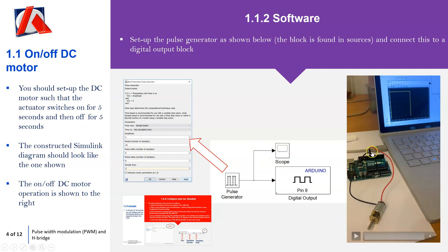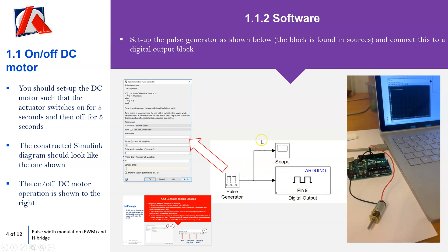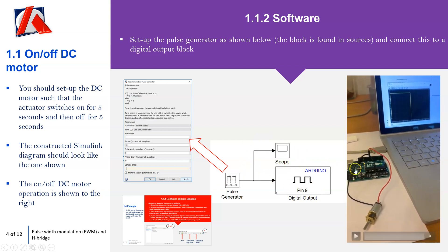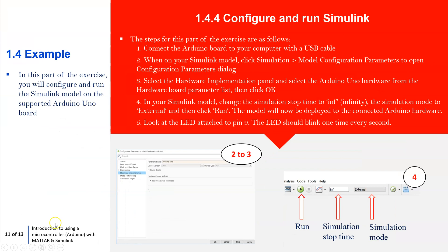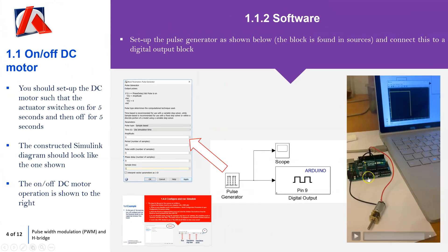I've got a scope so I can look at the input being applied and removed to pin 9. In terms of running this, once you've got the hardware sorted and the software set up, look back at the first video on the introduction to using a microcontroller — Arduino with MATLAB and Simulink — and follow those steps for getting it running. So that's to get you back into the idea of turning the motor on and off and applying full power — 5 volts.